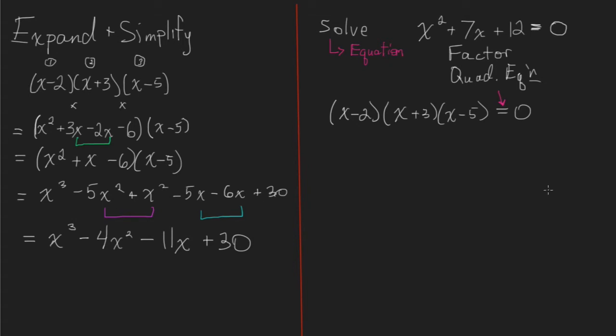So the nice thing about this is what we have is we have a multiplication of something. Let's call that question mark, times something else. Let's call that a square, times something else. Let's call that a triangle. And what do we know about multiplication when it comes to having an answer of zero? There's only one way to multiply to zero, and that's that something, at least one of the things in this set of numbers, has to be zero.